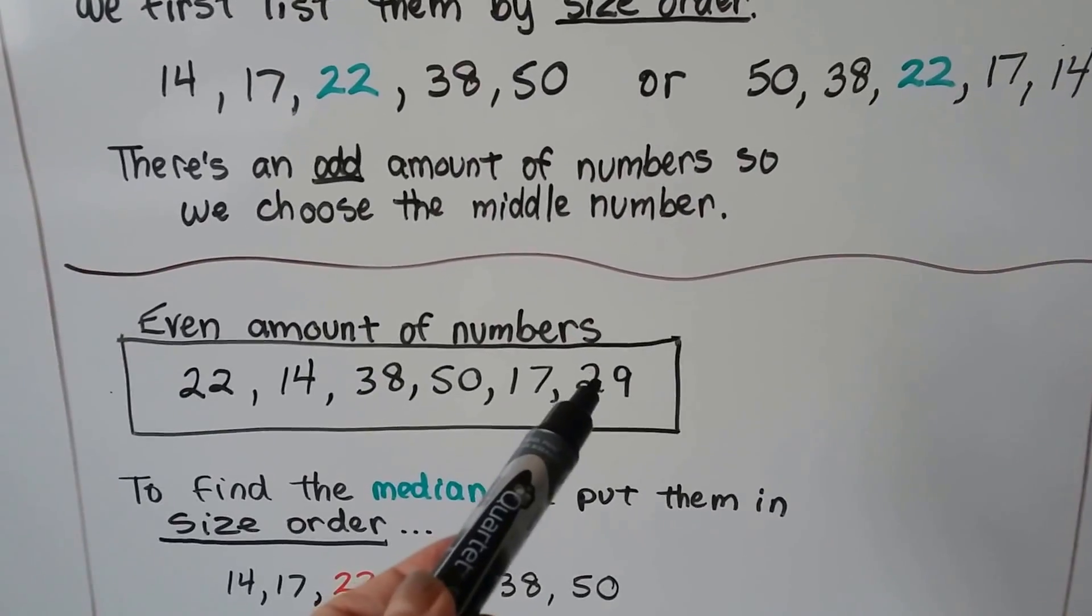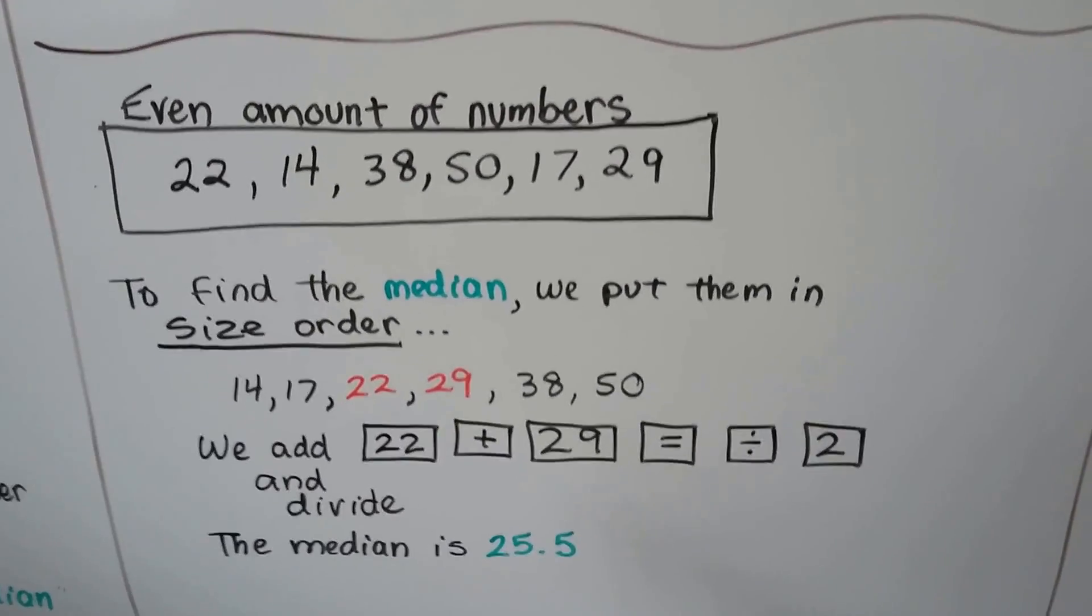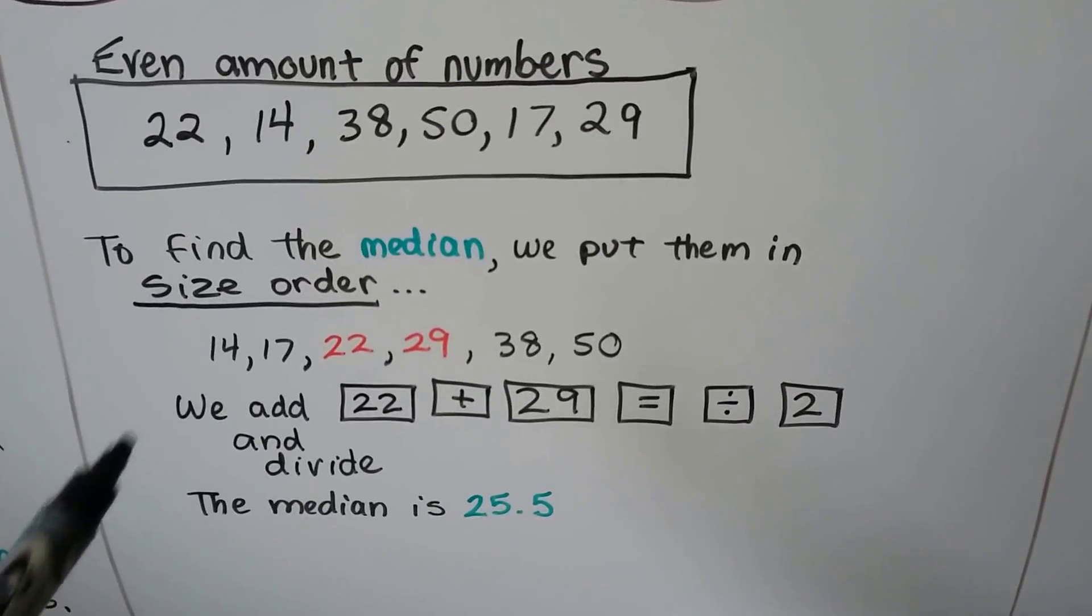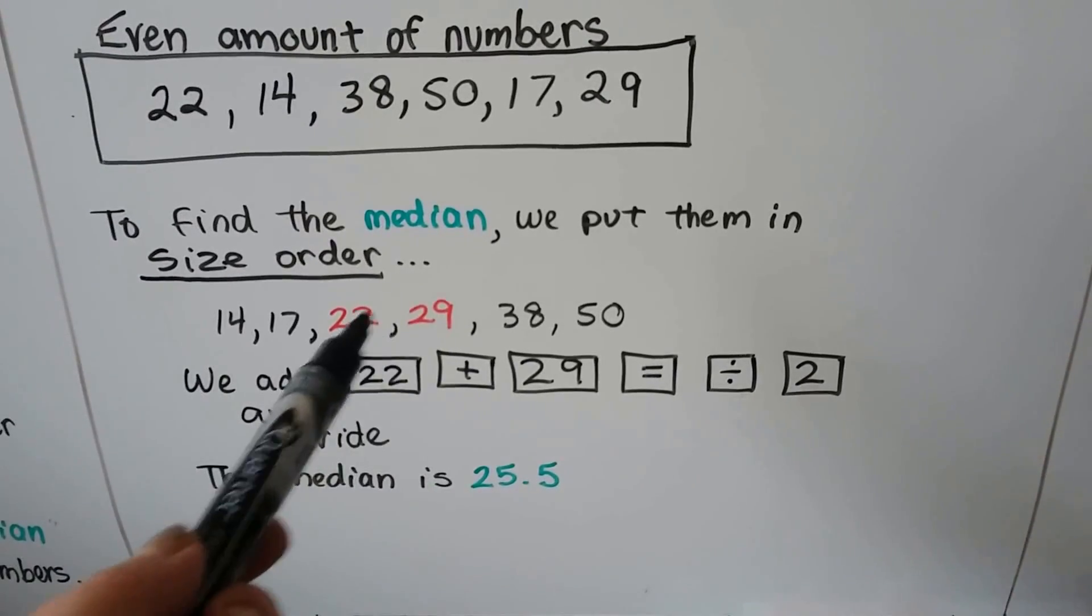Now I added a 29 to the group. So now there's an even amount of numbers. There's six of them. To find the median, we put them in size order, and we see the two middle numbers, the 22 and 29.